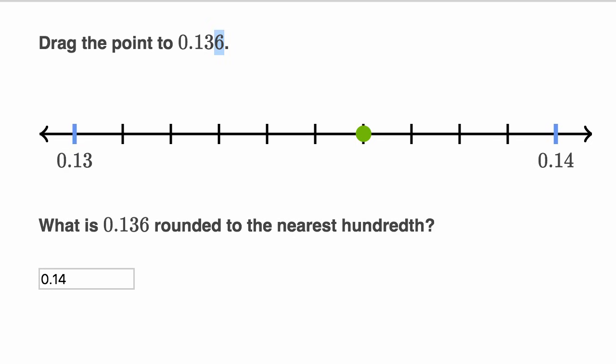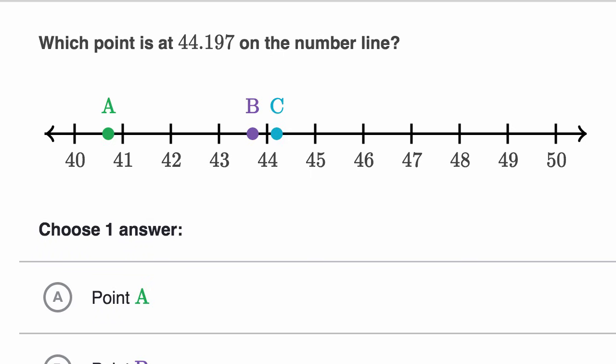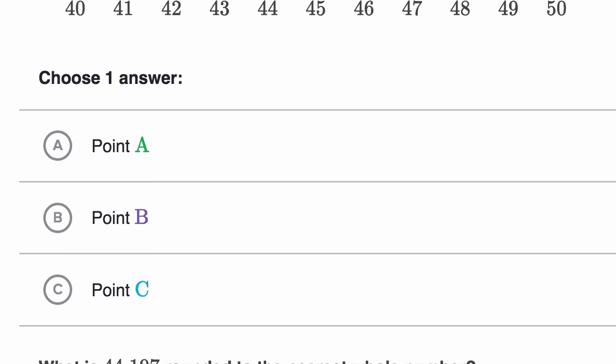Let's do a few more examples here. So let's say that, so they're asking us which point is at 44.197 on the number line. So let's see, that's going to be between 44 and 45. So it's right over here, 44.197. So that would be point C.